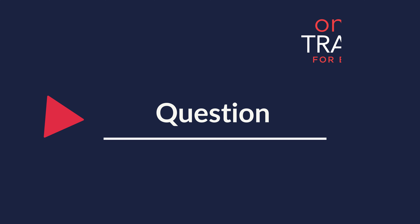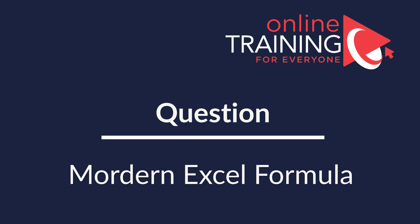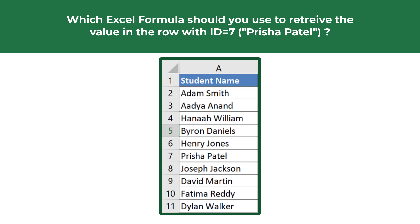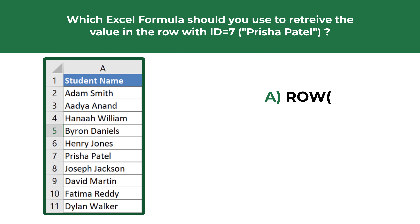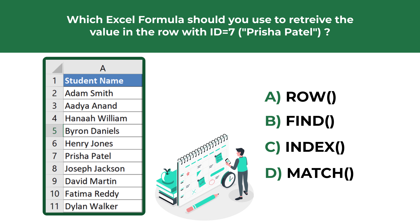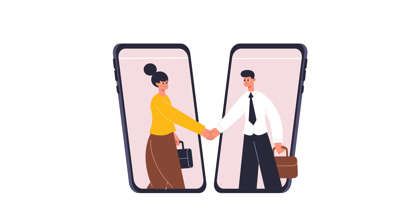Here's a question which tests your knowledge of modern Excel formulas. You are presented with a list of student names in column A and you need to decide which Excel formula to use to retrieve the value of the row with ID 7 — the value in this row is Prisha Patel. You have four choices: Choice A — ROW, Choice B — FIND, Choice C — INDEX, Choice D — MATCH. Give yourself 10 to 20 seconds and see if you can pause this video to come up with the right solution.